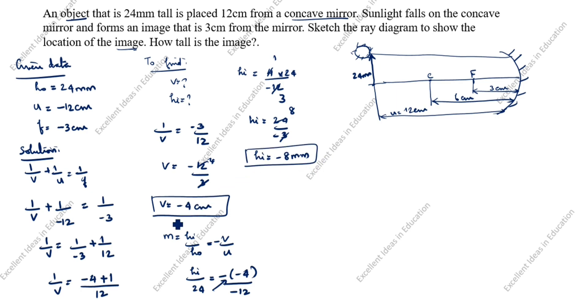Now we got HI and V value. Now we will draw the ray diagram. Here is 6, 3. So 4 comes here. So this is V. This is 4. HI is minus. Minus means it comes down. This value is 8 mm.